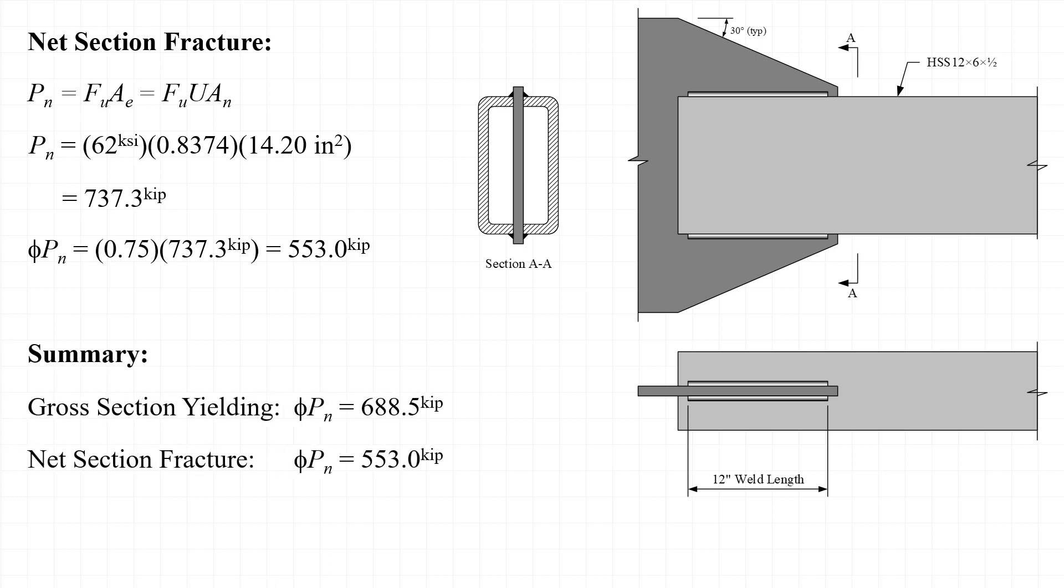In summary, we have a gross yielding design strength, phi times P sub N, of 688.5 kips, and we have a net section fracture design strength, phi times P sub N, of 553 kips. The lower of those two governs, and our available strength is equal to 553 kips.